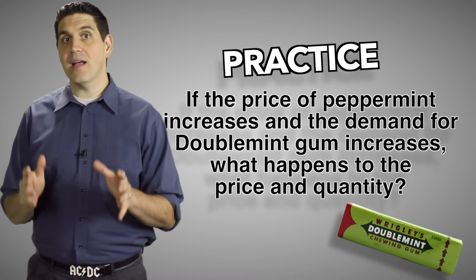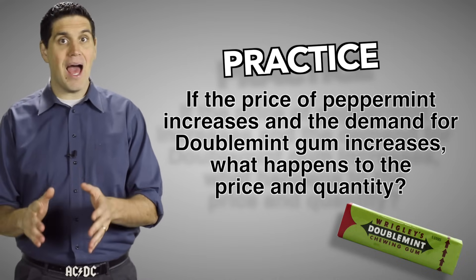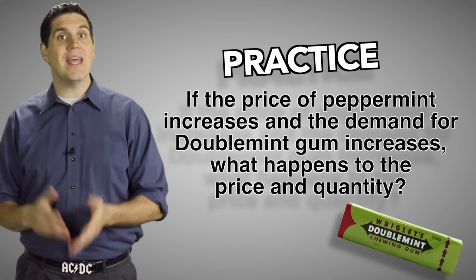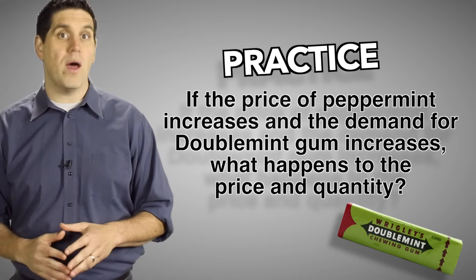Okay, let's say the price of peppermint, which is the main ingredient to producing Doublemint gum, increases, at the same time that a new throwback to the 80s fad increases the demand for Doublemint gum. Figure out what's going to happen to the equilibrium price and quantity.